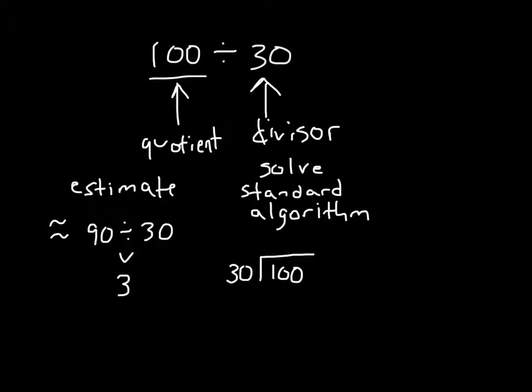30 goes into 100, 3 whole times, because 3 times 30 is 90. 100 minus 90 is 10, so our remainder is 10. 100 divided by 30, the answer is 3 with a remainder of 10.